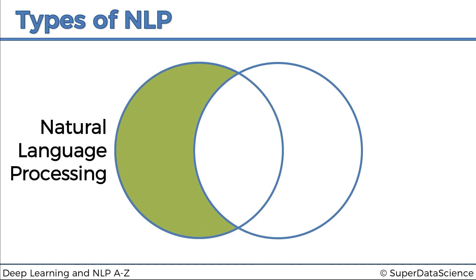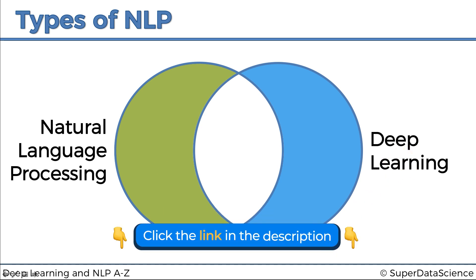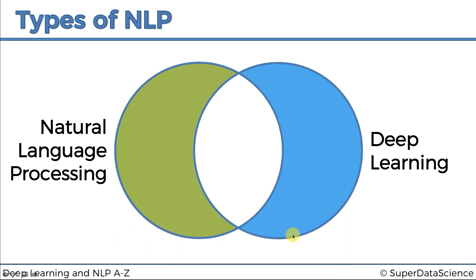On the right we've got deep learning. These are all algorithms that have something to do with neural networks — basically anything called a deep learning algorithm falls in here. They don't have to be natural language processing; they can be classification or anything else. Natural language processing is any algorithm or model that has something to do with processing natural language into machine terms.